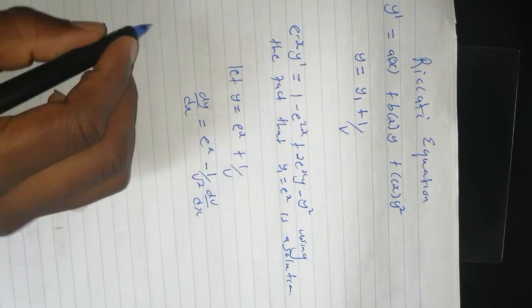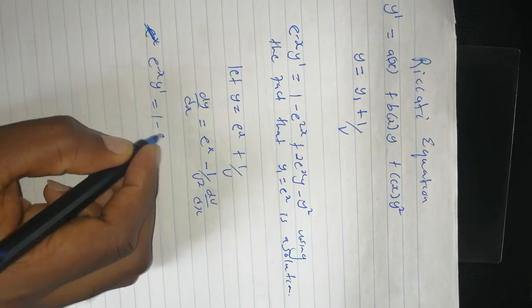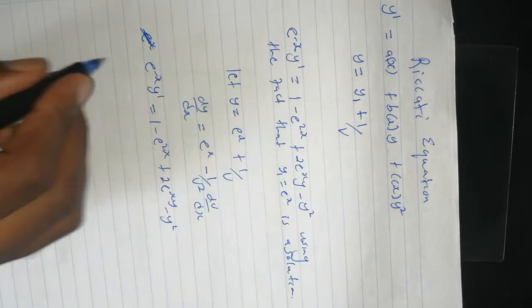From there, we take the whole equation: e to the power negative x times y prime equals 1 minus e to the power 2x plus 2e to the power x times y minus y squared.